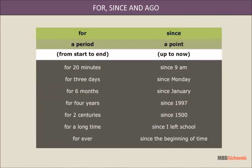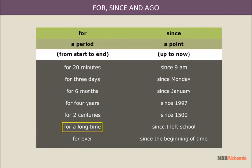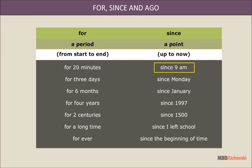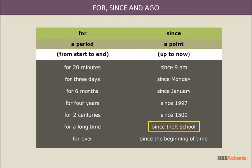For is used for a period of time — for example: for twenty minutes, for three days, for six months, for four years, for two centuries, for a long time, forever. Since is used for a specific moment or point in time — for example: since nine a.m., since Monday, since January, since 1997, since 1500, since I left school, since the beginning of time.